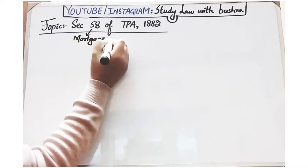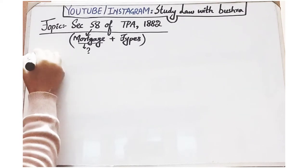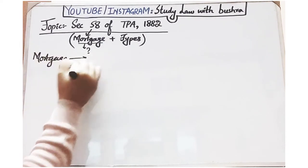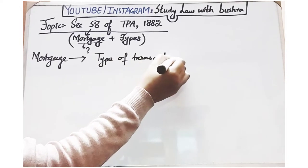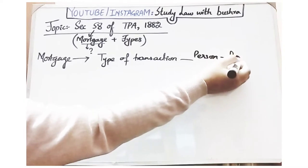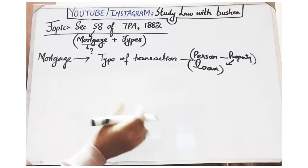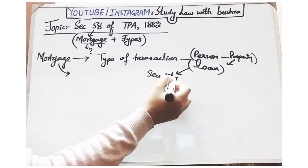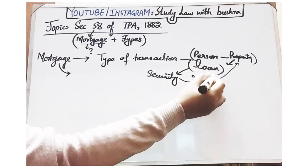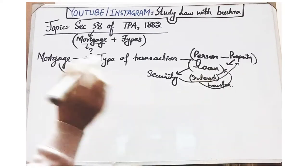Section 58 of TPA basically deals with mortgage and types of mortgage. We will discuss them one by one. Sabse pahle humare dekhna hai ke mortgage itself kya hai. Section 58 ke according, mortgage ek aisi type of transaction hai jis ke andar ek person apni property kisi dusare bhande ko transfer karta hai in order to take the loan from that another person.